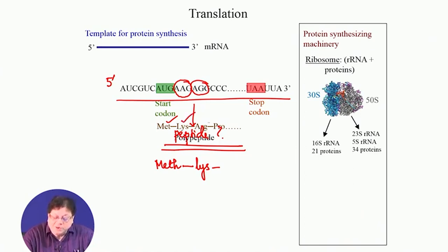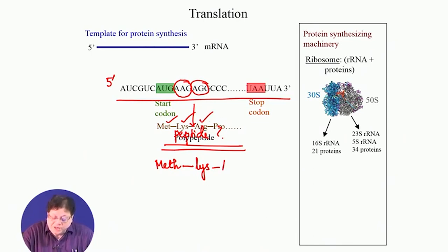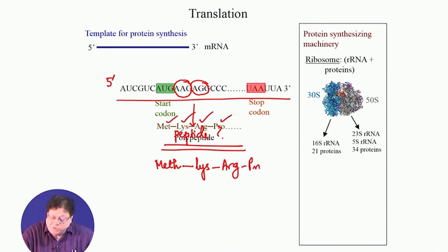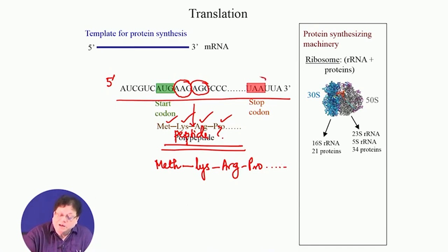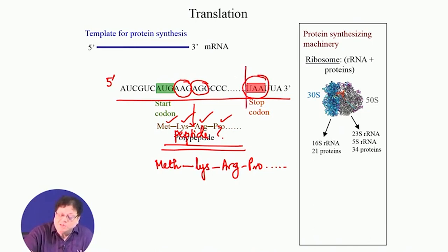The second one is lysine, which we have already determined. AGC codes for serine, AGG codes for arginine, and CCC codes for proline. So in this way, following the genetic code codon by codon, and then suddenly at the last you see that there is a UAA, which is a stop codon. So your protein synthesis will go from the start codon to that stop codon.